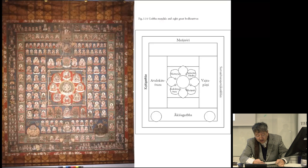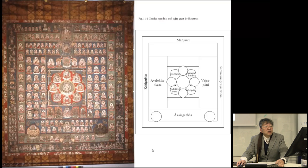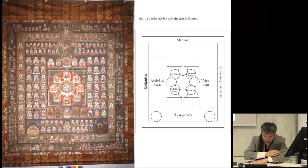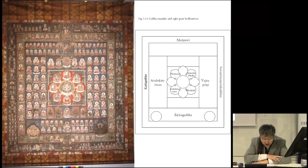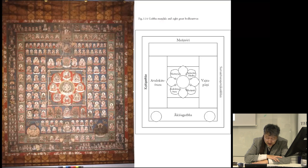The other four bodhisattvas — Samantabhadra, Manjushri, Avalokiteshvara, Maitreya — are arranged in four intermediate directions of the central lotus petals. It turns out that the Garbha Mandala was devised as the definitive version of the mandala of the three families evolved from the triad of Buddha, Avalokiteshvara, and Vajrapani, by reorganizing theories found in earlier scriptures of Esoteric Buddhism. However, the completion of the mandala with a fully symmetrical geometric pattern was not realized until the emergence of the Vajradhatu Mandala.